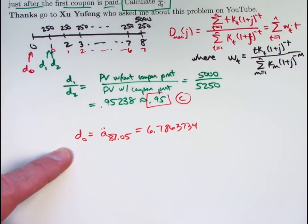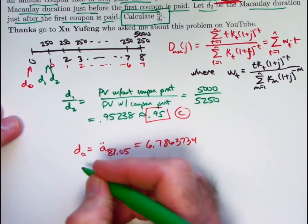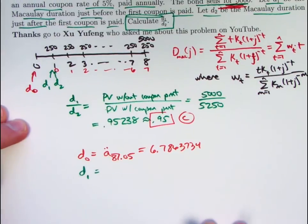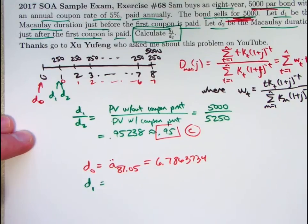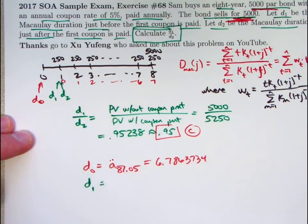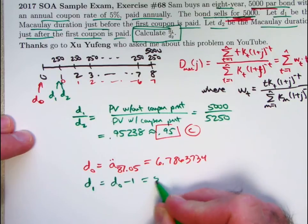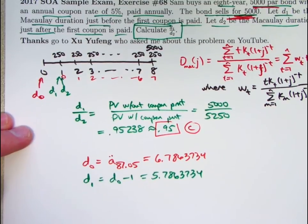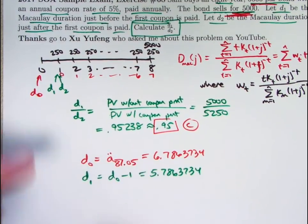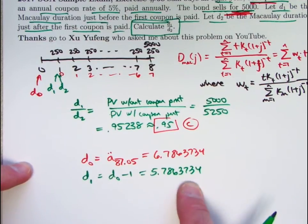Now I'm going to write down something that should be fairly intuitive, though you might wonder how to prove it. I will show you how to prove it here in a minute, but D1, the duration relative to time 1, right before that first coupon is paid, if you think about it, since these, relative to this new timescale, we're just shifting down by 1, it should be the same as D0 minus 1. And that is true, so this will be 5.7863734. I'll show you how to verify it algebraically here in a minute, but that should make some sense. It's the same series of payments, but now we're thinking about it one year in the future, so all the times get shifted down by 1, so I could take that old duration and subtract 1 from it and get this.